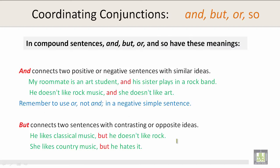In compound sentences, and, but, or, and so have these meanings. And connects two positive or negative sentences with similar ideas. For example: my roommate is an art student and his sister plays in a rock band. Another one: he doesn't like rock music and she doesn't like art. Remember to use or, not and, in negative simple sentences.